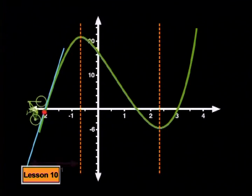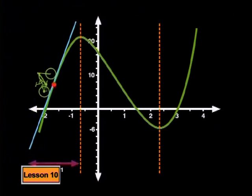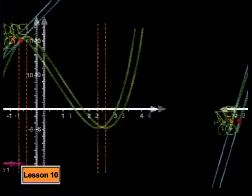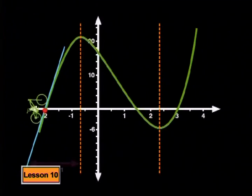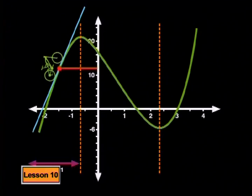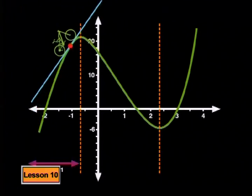We are going to watch the animation again. This time, I want you to try and focus on something else. I'd like you to think about why the bicycle is going uphill or downhill in terms of what is happening to the function — in particular, what is happening to the function's value. It seems to me that the bicycle is going uphill because the graph is going up. The function value is increasing. The y value of the function is about 2, and now it seems to be about 12. The function value seems to be increasing as the bicycle is riding along.